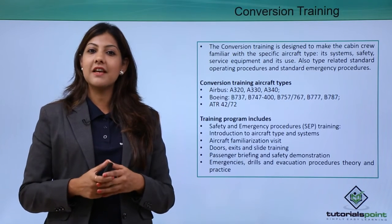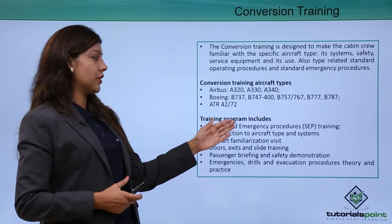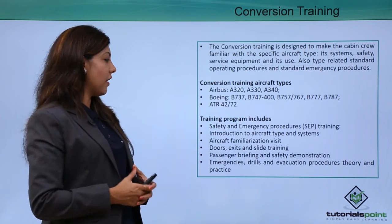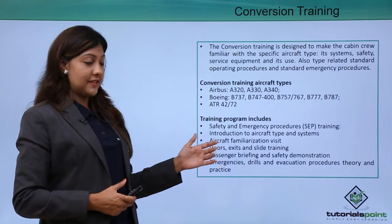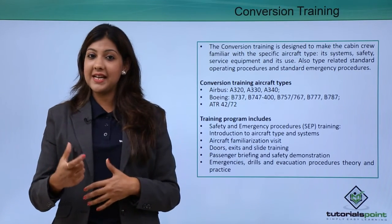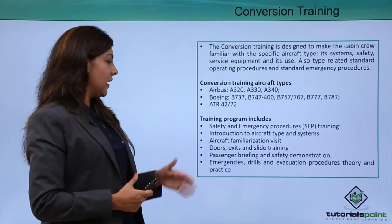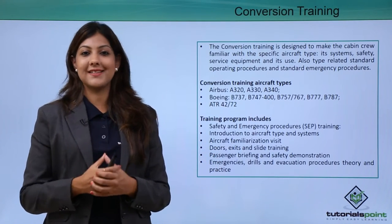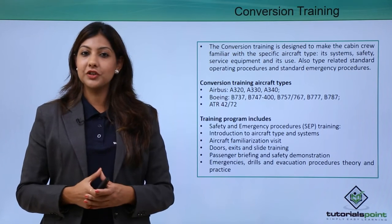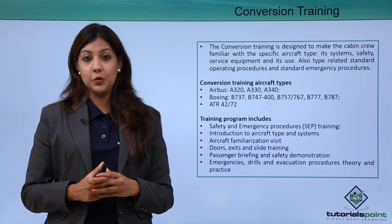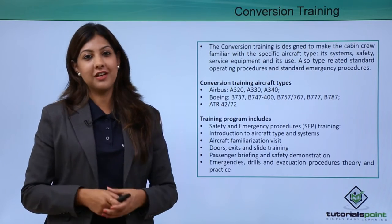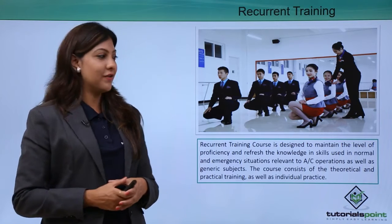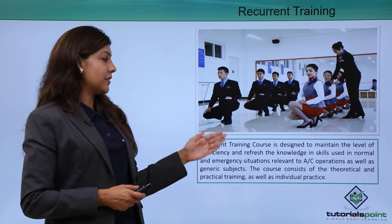Conversion training also covers aircraft familiarization, visiting the doors, different slides and exits, passenger briefing, safety demonstrations, and different emergency drills. Conversion training includes Airbus models, Boeing models, and ATR models — the 42-seater and 72-seater — enabling cabin crew to fly different kinds of aircraft.